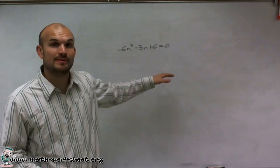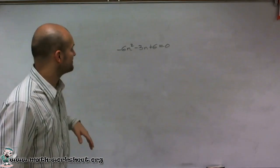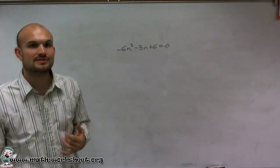Welcome. What I want to do is show you how to find the discriminant of this equation. In the equation, we have negative 6n squared minus 3n plus 6 equals 0.